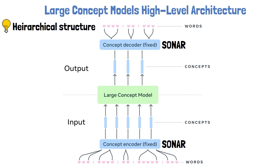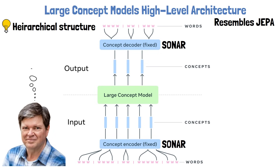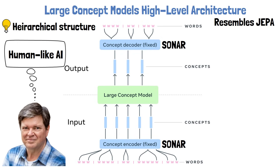The hierarchical structure is explicit in the architecture: first extracting concepts, then reasoning based on these concepts, and finally generating output — possibly multiple times without needing to run the large concept model again. It is also worth mentioning that predicting information in an abstract representation space is not entirely new to Meta AI; it is somewhat similar to the Joint Embedding Predictive Architecture, or JEPA, which targets Yann LeCun's vision for a more human-like AI. Previous reviews of JEPA models for images and videos can be found in the description.